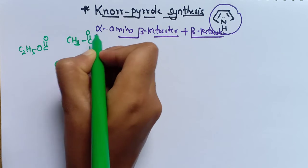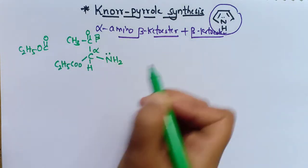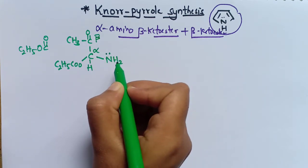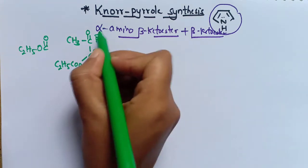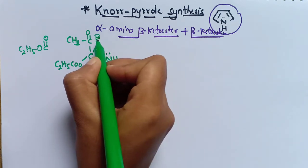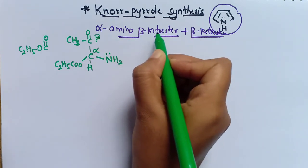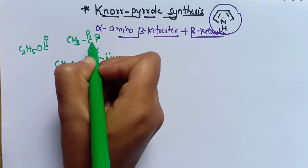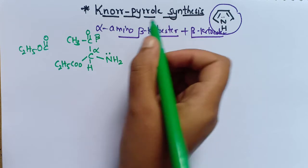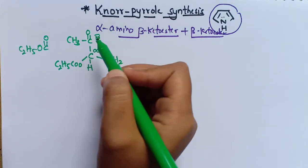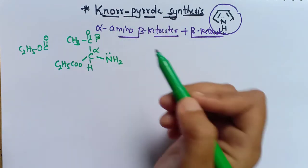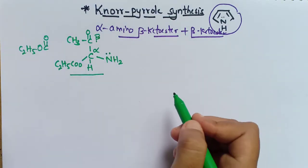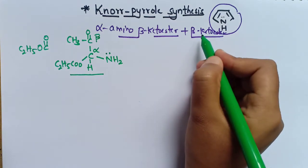The second carbon is termed the beta carbon. For the alpha position carbon there is an amino group, so it is amino. For the beta position it is a ketone, so beta-keto ester. In the alpha position: amino; beta position: ketone — and it is an ester. So alpha-amino beta-keto ester is the name of this structure.